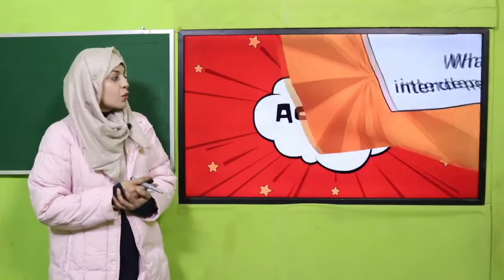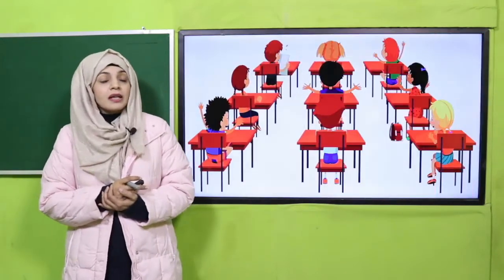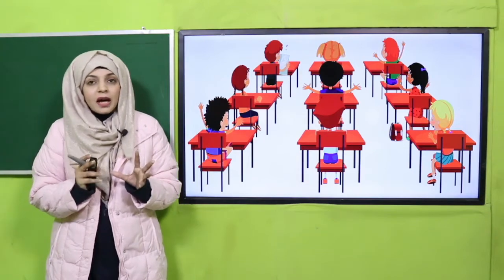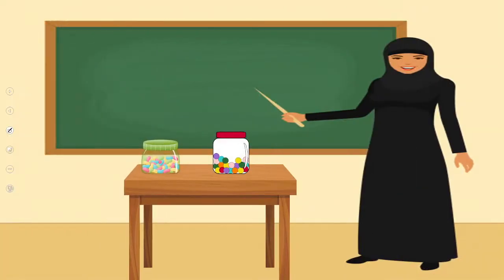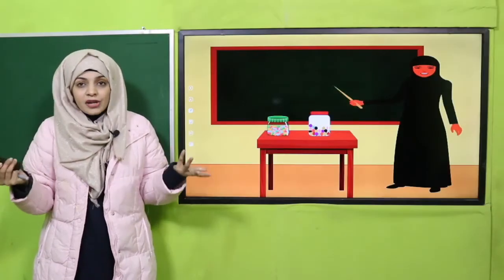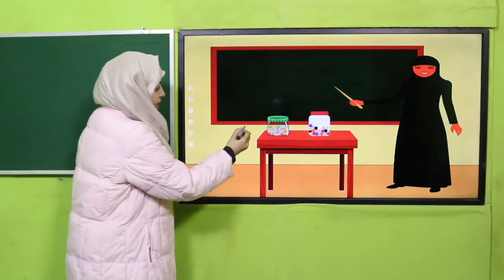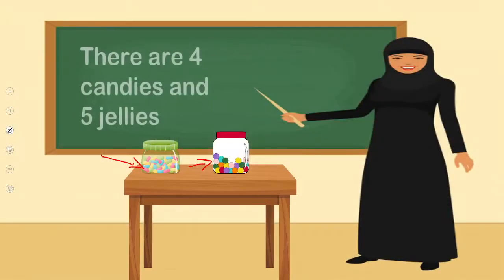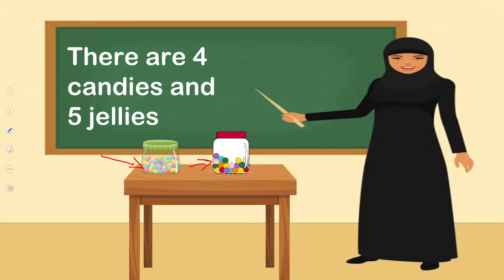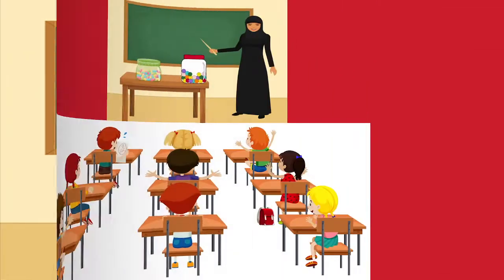Now let's quickly move forward towards an activity so that we will start the lesson. My dear students, aapko ek classroom nazara hai. In this classroom there are nine students — count them: one, two, three, four, five, six, seven, eight, nine. The teacher says: do you want a treat today — jellies or candies? You can see them on the table. There are four candies and five jellies.